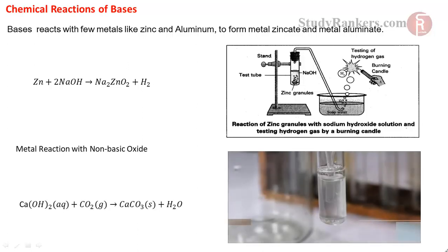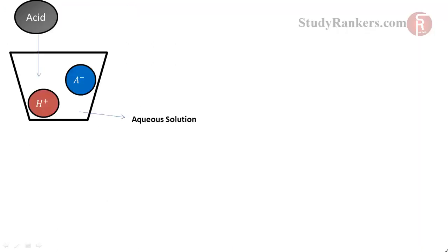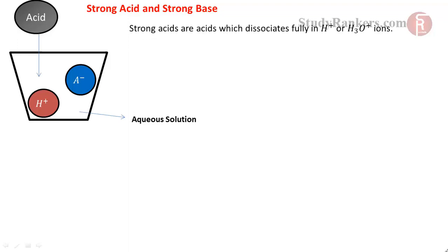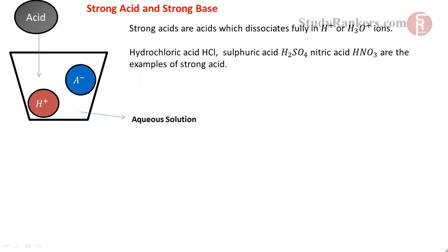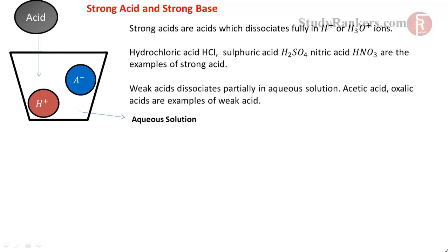Now let's discuss what we mean by strong acids and strong bases. Strong acids are acids which dissociate fully into H⁺ or H₃O⁺ ions. Hydrochloric acid HCl, sulfuric acid H₂SO₄, and nitric acid HNO₃ are examples of strong acids. Weak acids dissociate only partially in aqueous solution; acetic acid and oxalic acid are examples of weak acids.